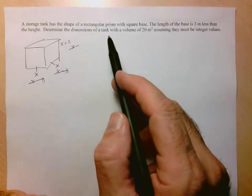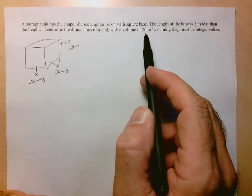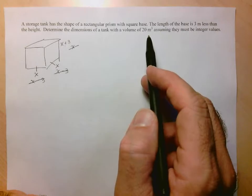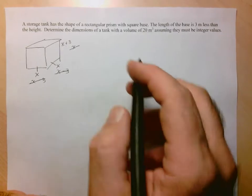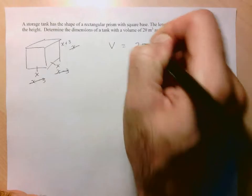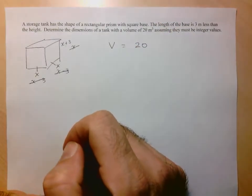They say determine the dimensions of the tank with a volume of 20 meters cubed, assuming that they must be integer values. So what we need is we need the volume of the tank to be 20 meters cubed.